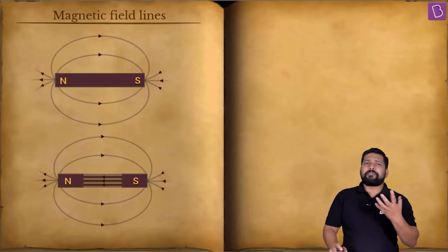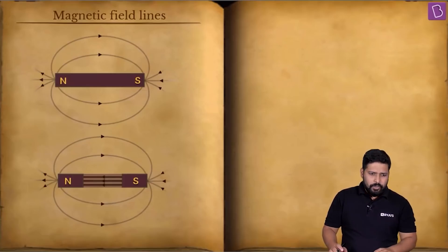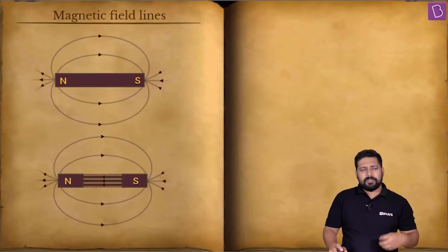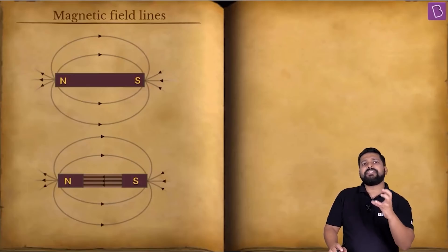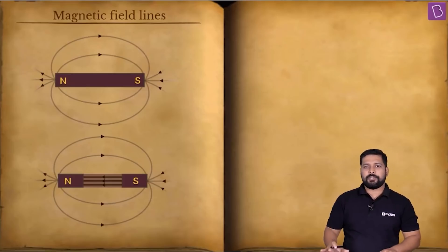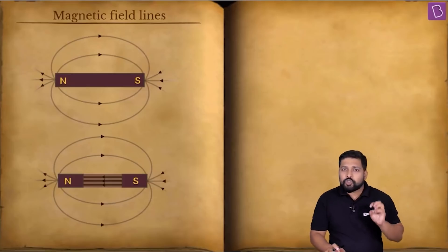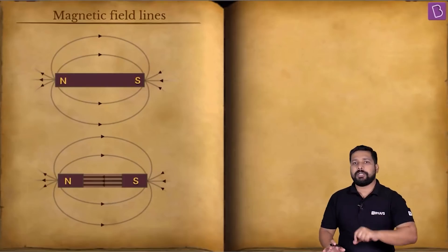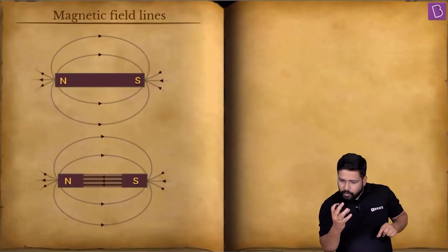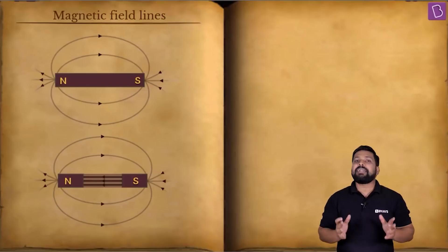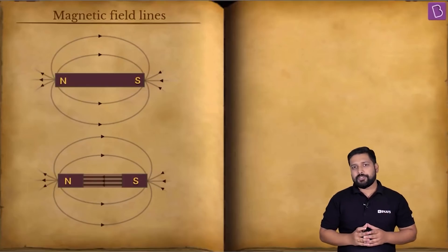The first difference is that for electric fields, the field lines originate at the positive charge and sink at the negative charge. There is a particular source where all these lines originate and a particular sink where they all end. That does not happen in the case of magnets.